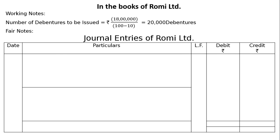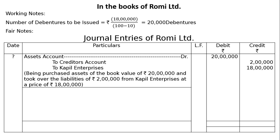First, Assets Account is debited Rs. 20 lakhs; Creditors Account credited Rs. 2 lakhs; Kapil Enterprises credited Rs. 18 lakhs. Being: purchased assets of the book value of Rs. 20 lakhs and took over the liabilities of Rs. 2 lakhs from Kapil Enterprises at a price of Rs. 18 lakhs.